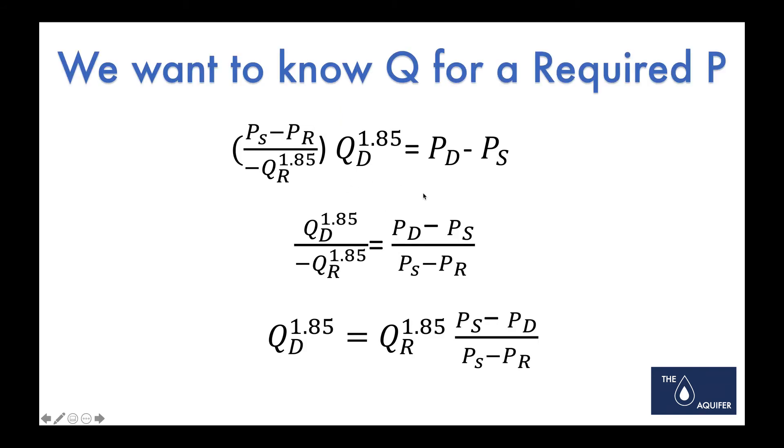And this gets pretty involved, but basically working through this, you can figure out your desired flow is equal to your residual flow times the 1.85 power. We're kind of working off of Hazen and Williams here. That's where these 1.85s come in, and you can do a little bit of research online to learn a little bit more about Hazen and Williams.